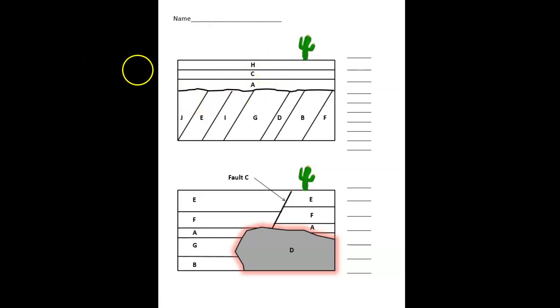After that break, we deposit A, C, H. So the order F, B, D, G, I, E, J, and the last thing would be - well, after erosion - A, C, H would be the correct order for the sequence. And of course, we could include an erosional event in there if we choose.